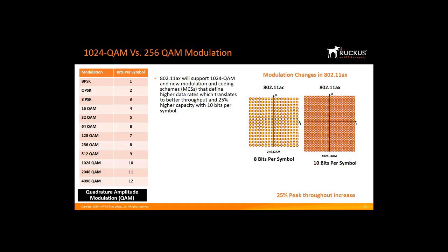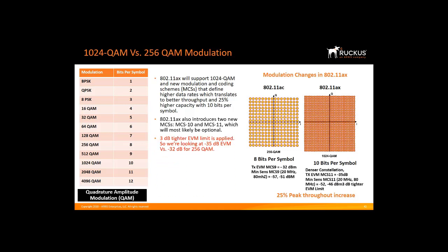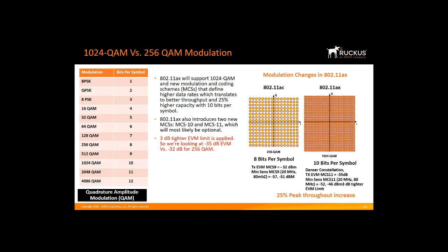Applications such as 4K video streaming are expected to drive internet traffic to 278 petabytes per month by 2021. 11AX also introduces two new modulation coding schemes, MCS-10 and MCS-11, which will most likely be optional. Due to the denser constellation, a 3 dB tighter EVM limit is applied — minus 35 dB EVM versus minus 32 dB for 256 QAM. 1024 QAM can only be used with 242 subcarriers or more, meaning at least a full 20 MHz channel will be needed.